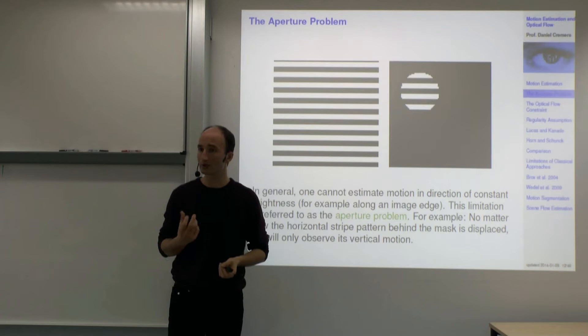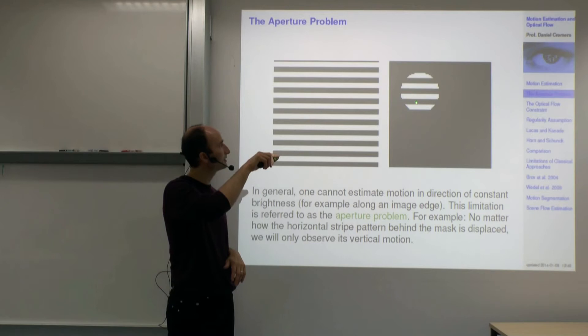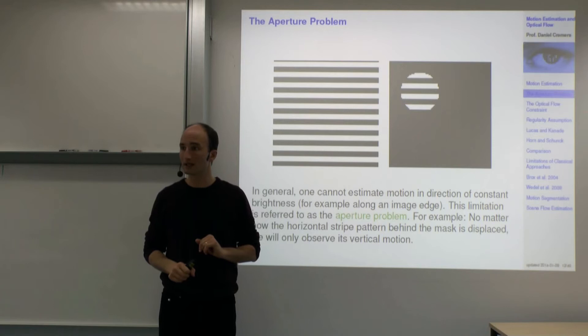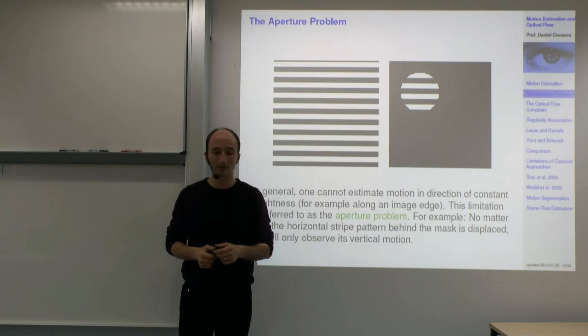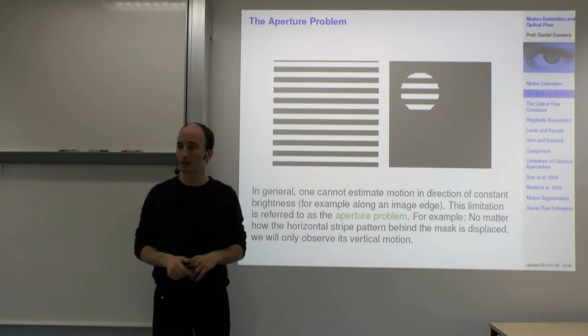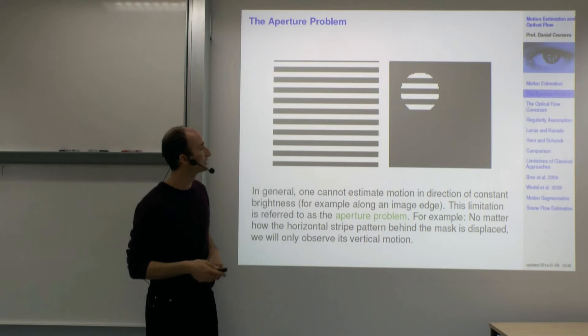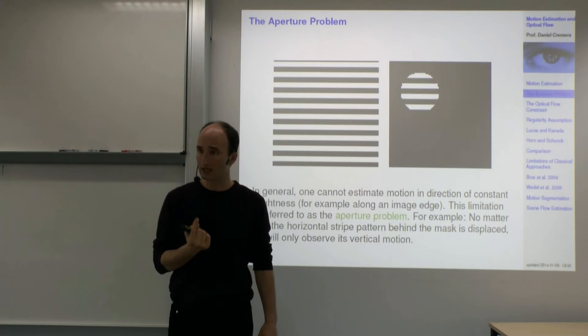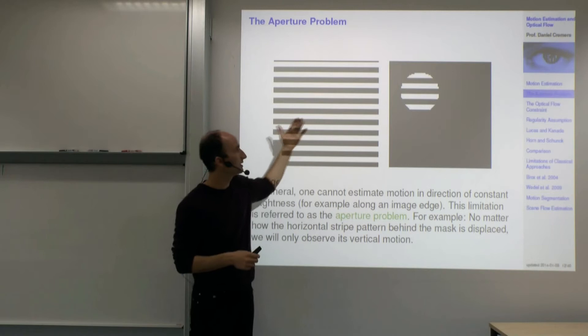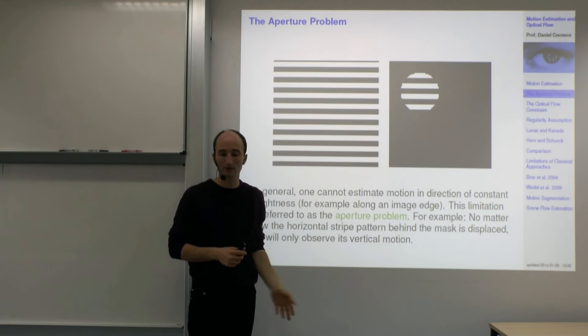What we typically get is the motion normal to the isolines of constant intensity. Anything that moves along an isoline produces no intensity change by definition. So any motion in the gradient direction is what we can expect to estimate locally. Modern motion estimation techniques capture the component of motion in the gradient direction, then use additional assumptions of spatial smoothness to propagate that information into neighboring regions.